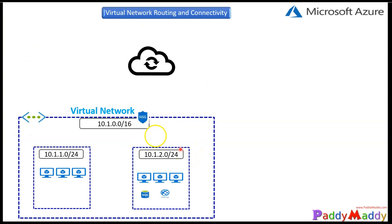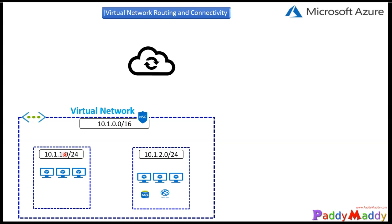Let's take an example where you have a virtual network. Within this virtual network, you have subnet 1 and subnet 2, and there are some resources on each of these subnets. When you configure any virtual network, by default all the resources can communicate with the internet — outbound is fully allowed. This means there are some default routes already configured, which are done by Microsoft Azure automatically.